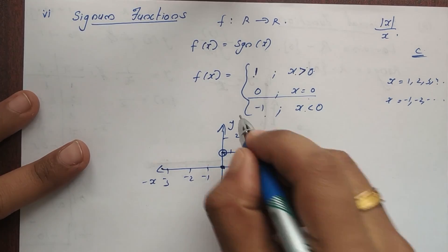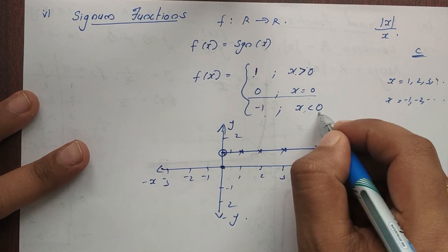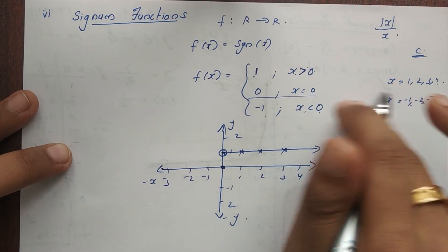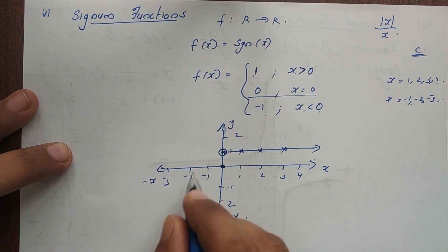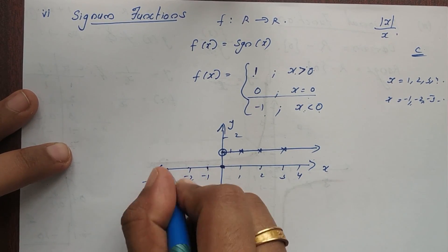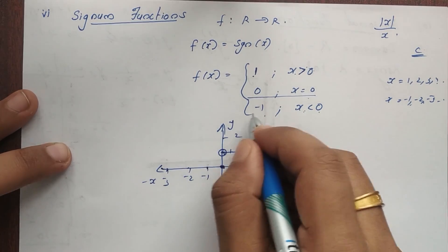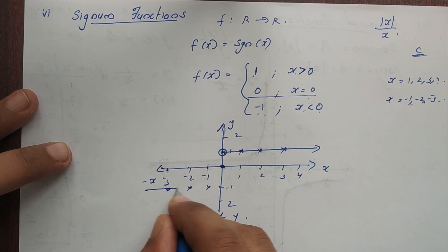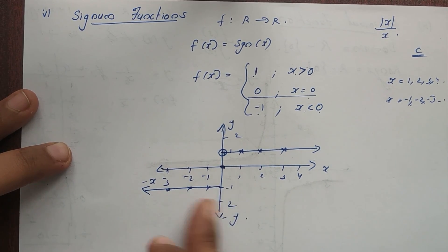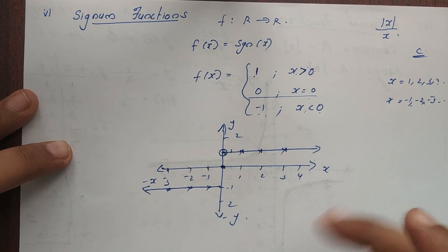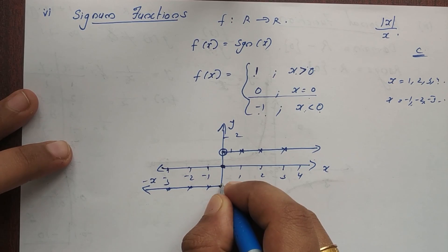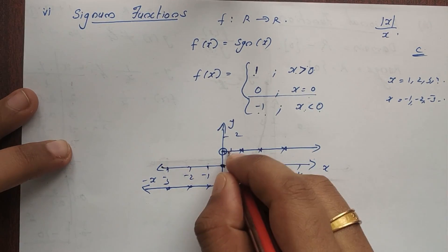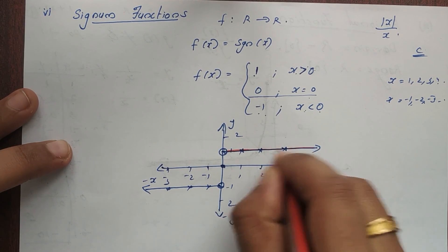For x less than 0 — that is minus 1, minus 2, minus 3 — the negative values give output minus 1. You continue here but you will not take the value at 0. So this is the graph of the signum function.